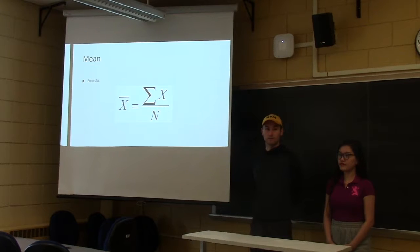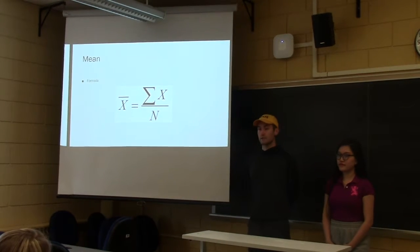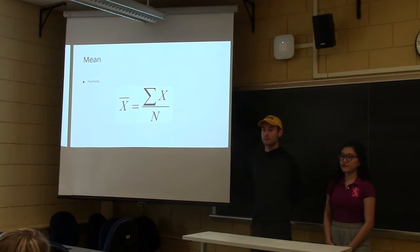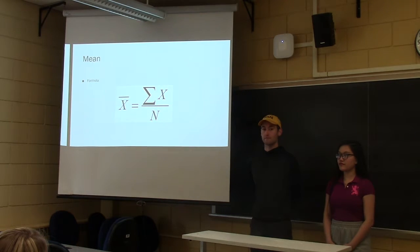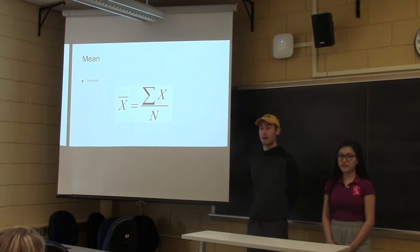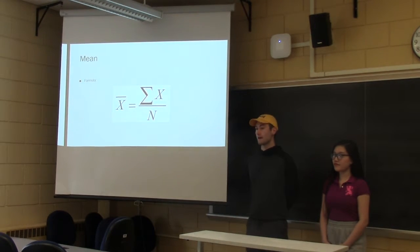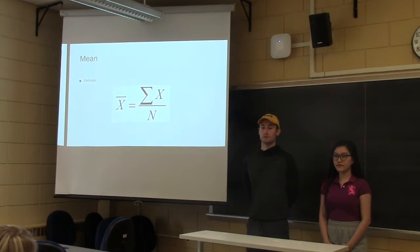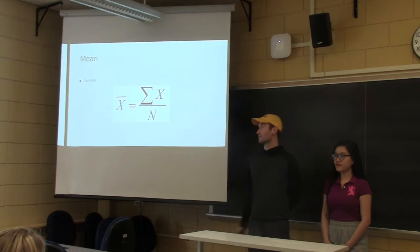The first type we're going to talk about is the mean. The formula for the mean is you sum up all of the values you have in your data, and then you divide by the number of observations you have in the data, and then that will give you a value that's typically the average you consider.